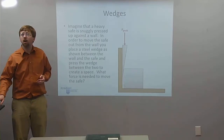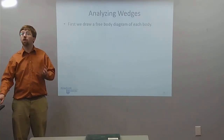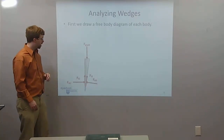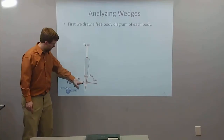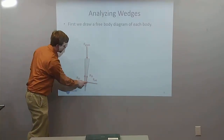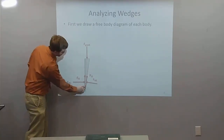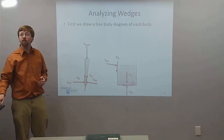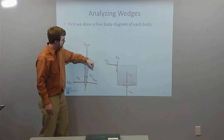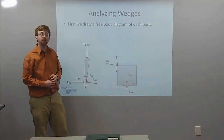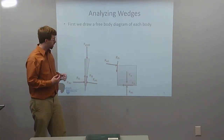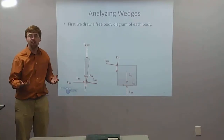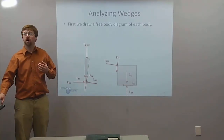To analyze this whole system, we first draw the free body diagrams. For our wedge, we've got the pushing force pushing down on the top, and at the two points of contact we've got the normal force from the wall and the normal force from the safe. Since the wedge is at a slight angle, the normal force is perpendicular to that surface. At each contact point we also have friction forces. For the safe, we have equal and opposite forces — the normal force and friction force of the wedge on the safe — plus the weight of the safe and a normal force and friction force down at the base.